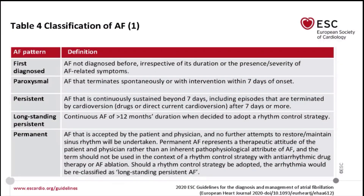It is important to differentiate between the definitions of atrial fibrillation. Paroxysmal AF refers to episodes that terminate spontaneously or with intervention within seven days of onset. Persistent AF refers to episodes sustained for more than seven days, including those terminated by cardioversion after seven days or more. Permanent AF is accepted by both the patient and physician, with no attempts at rhythm control or cardioversion, and the patient is maintained on long-term oral anticoagulant therapy plus rate control therapy.